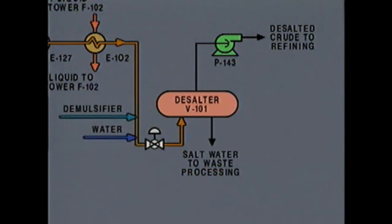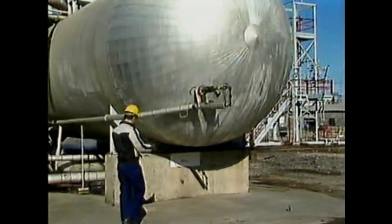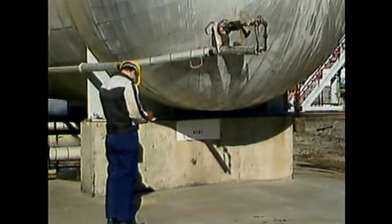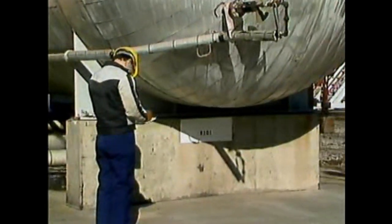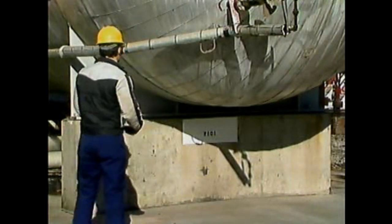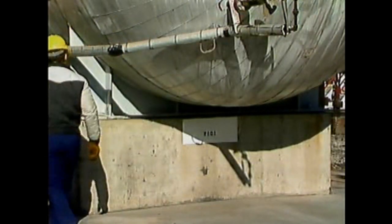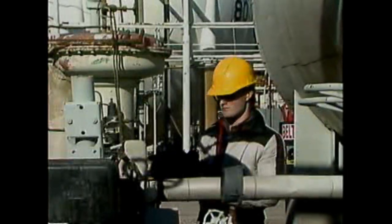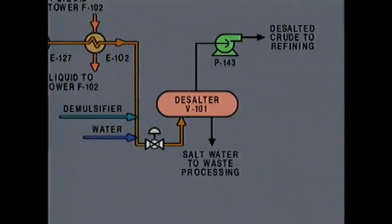Then the mixture of oil, water, and demulsifier enters desalter V-101. As you trace the piping from heat exchanger E-102 in the direction of the desalter, you should find the control valve in the piping before you get to the desalter.